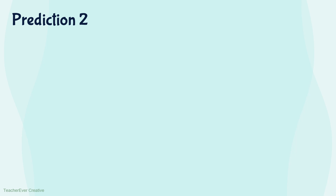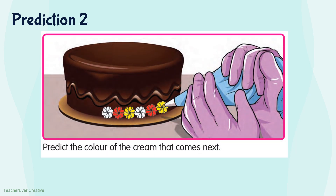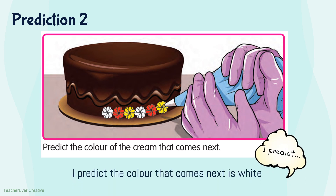Let's make prediction two. Observe the picture carefully. Predict the colour of the cream that comes next. If you look at the picture, you can see white cream, red cream, yellow cream — white, red, yellow. So, there is a pattern here. What comes next should be white. So, I predict that the colour that comes next is white.